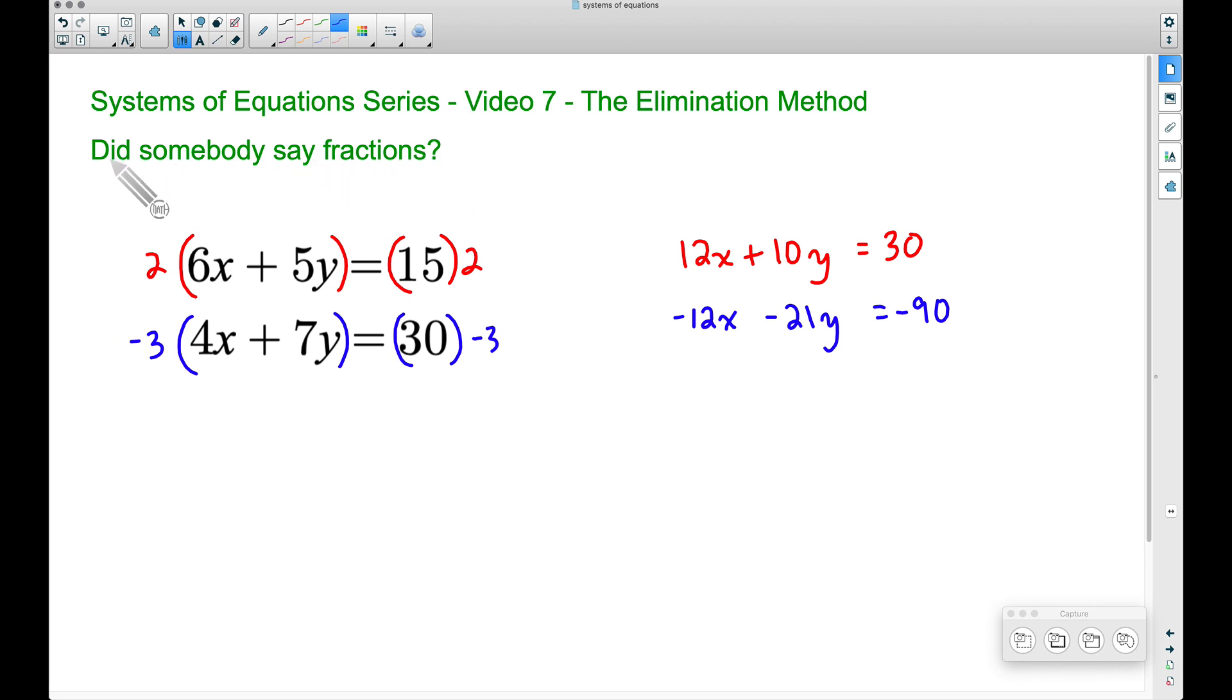Now I didn't even mention this at the beginning of the video, but did somebody say fractions? Here's what's about to happen. When we eliminate our x's here, we have 10y minus 21y, and if we work this out, combining like terms, we get negative 11y. This is equal to 30 minus 90, that's negative 60.